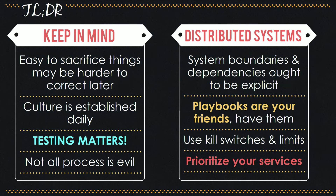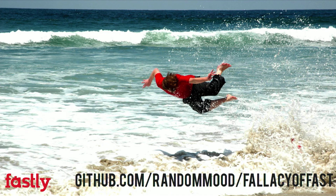TL;DR: It's easy to sacrifice things, and the easy-to-sacrifice things may be costly to correct later. The culture of your company is established daily, and the little mini choices you make — like whether you prioritize testing or not — say something more about your organization than you realize. Testing matters. Not every process is necessarily evil, so be appropriate. System boundaries and dependencies ought to be explicit; playbooks are your friends; use kill switches and limits within your design; and prioritizing your services — knowing what you can live without — is very valuable. Let's go fast while making fewer mistakes.